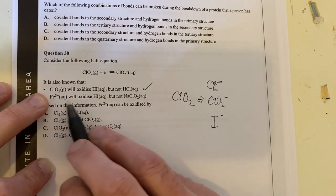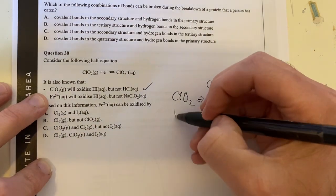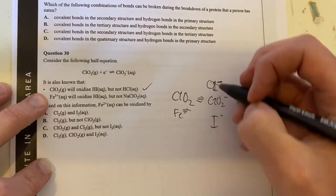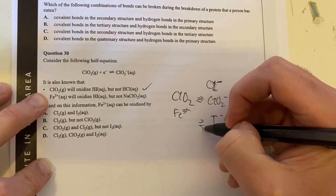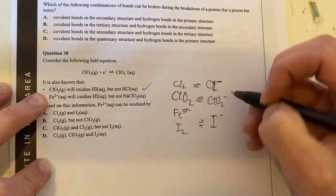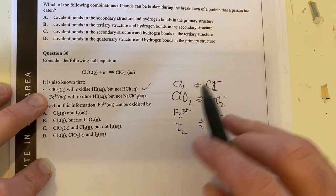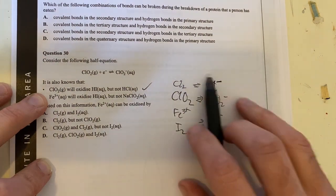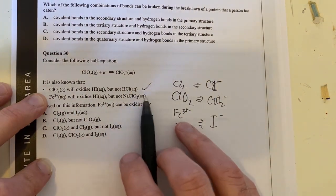So therefore the Fe3 positive must be below this one, so Fe3 positive, but above I. So therefore, I've got these equations here, I2, and this will be Cl2, and then therefore I've got a basic electrochemical series made up from knowing these reactions.